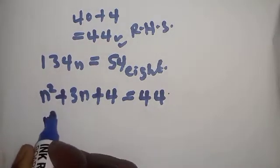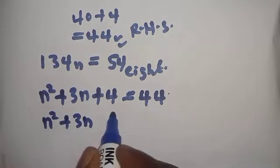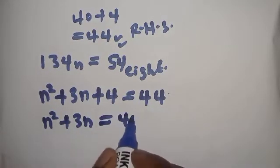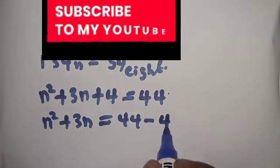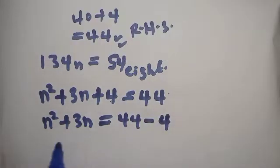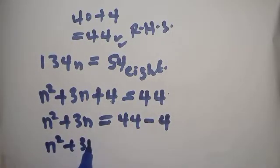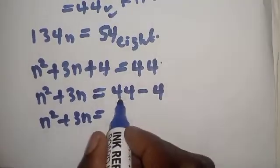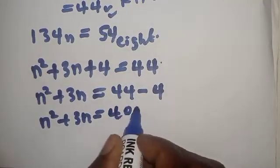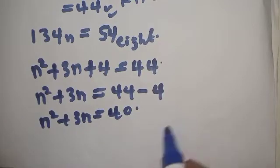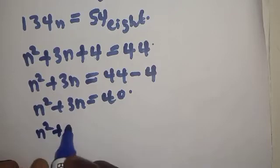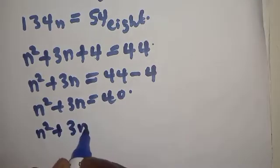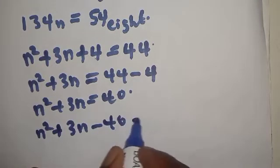This is now a quadratic equation. We have n squared plus 3n equal to 44 minus 4. That gives us 40. So n squared plus 3n minus 40 is equal to 0.